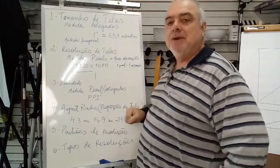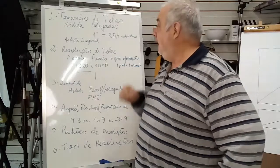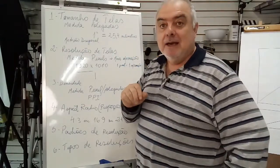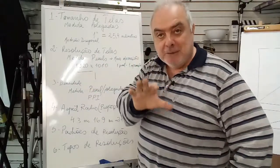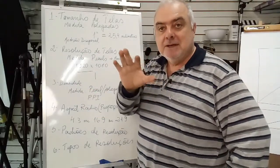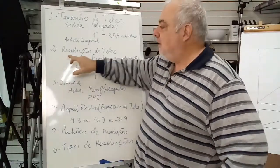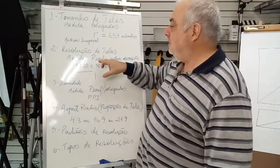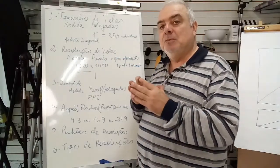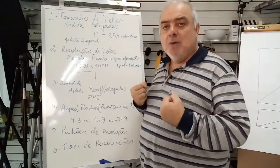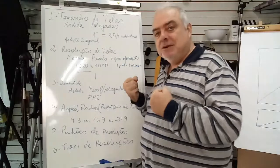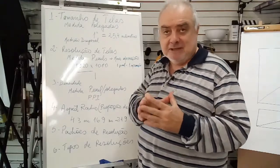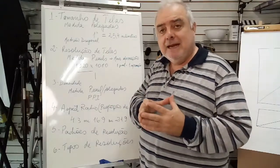Uma polegada equivale a mais ou menos 25,4 milímetros ou 2,54 centímetros. Mais tarde, vou explicar com detalhe exatamente como se mede. Um outro item importantíssimo é resolução de telas. Cada tela tem uma resolução. Essa resolução é medida em uma unidade chamada pixel. O pixel já é uma unidade pós-sistema internacional, então eles aqui não estão fora do parâmetro, porque o pixel, na época que foi criado o sistema métrico de pesos e medidas, não existia. Ele é posterior ao sistema.